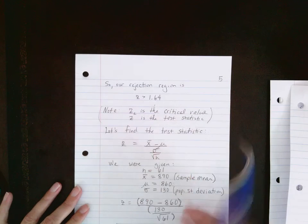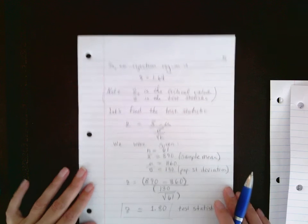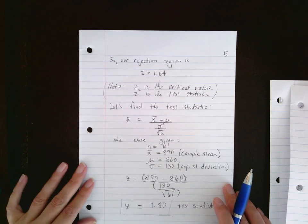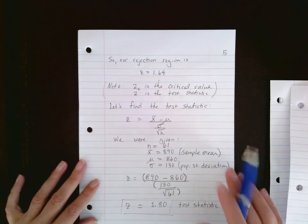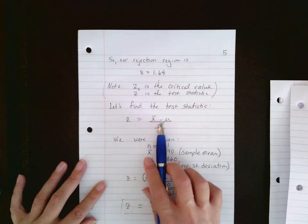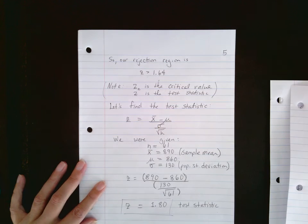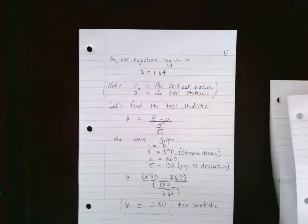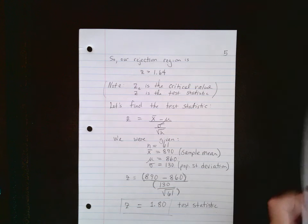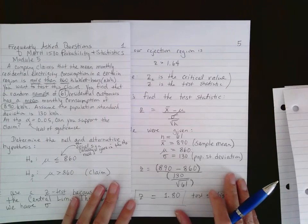Z-sub-c stands for the critical value, and Z stands for the test statistic. Here's the formula for Z: it's x-bar minus mu, divided by sigma divided by the square root of n.